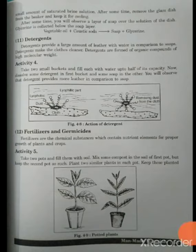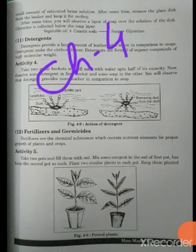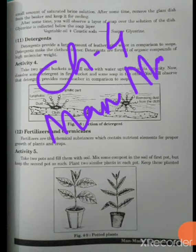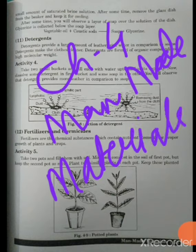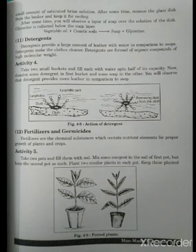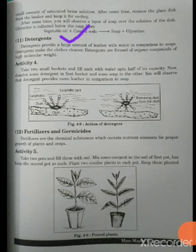Good morning dear students. As we are discussing Chapter 4, that is man-made materials. In this chapter we have talked about materials which are man-made and seen how they are very important for day to day life. In this category we have seen about clothes, medicines, industrial and domestic materials like soap, toothbrush, toothpaste, and so many things. Now we are going to discuss about detergents.